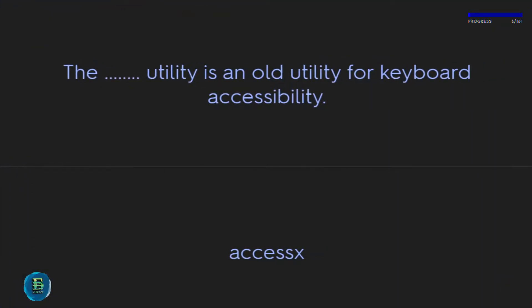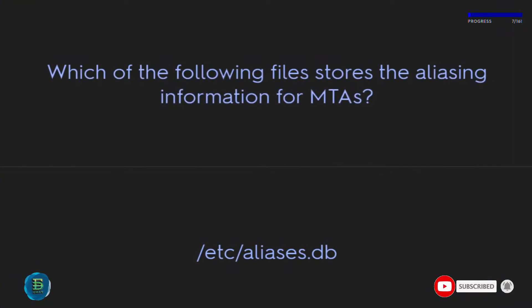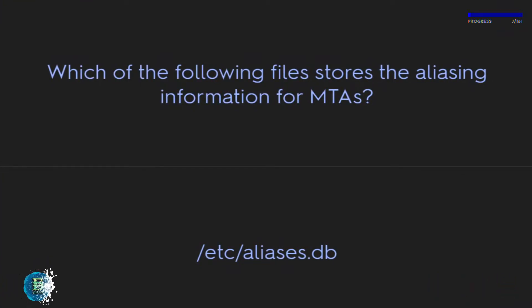The accessx utility is an old utility for keyboard accessibility. Which of the following files stores the aliasing information for MTAs? The answer is /etc/aliases.db.